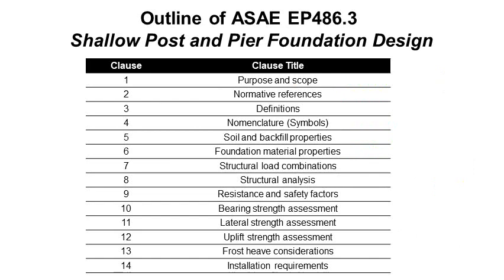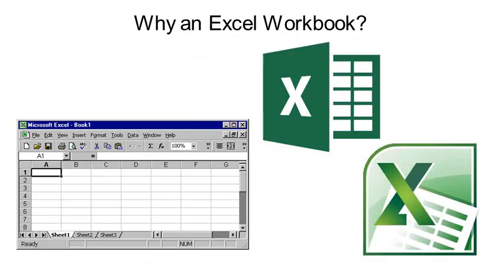This is an outline of the current standard. It contains 14 clauses. The primary objective of this design aid is to help designers complete the calculations in clauses 10, 11, and 12, which are titled Bearing Strength Assessment, Lateral Strength Assessment, and Uplift Strength Assessment. Again, these strength assessments are soil strength assessments. Nevertheless, some of these calculations can get quite involved, and not surprisingly, several folks have asked me if a computer-based program could be developed to help assist with the calculations.